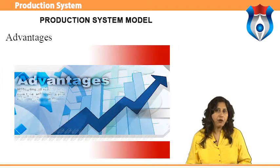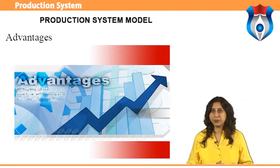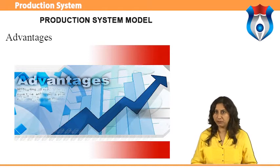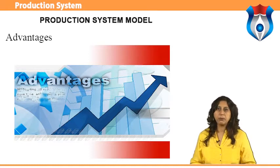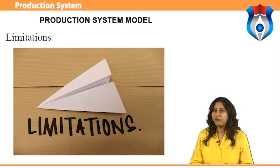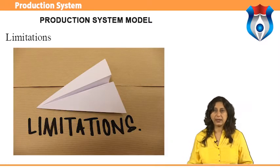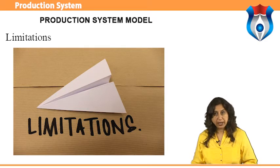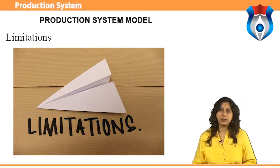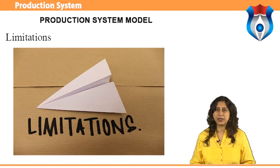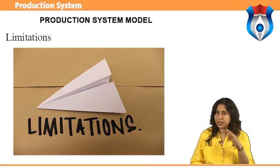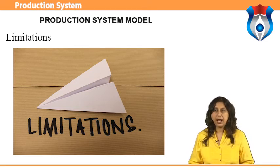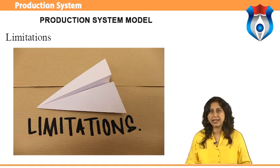Advantages of batch production include better utilization of plant and machinery and promotion of functional specialization. Limitations include: material handling is complex because of irregular and longer flows; production planning and control is complex; work-in-process inventory is higher compared to continuous production; and higher setup costs due to frequent changes in setup.